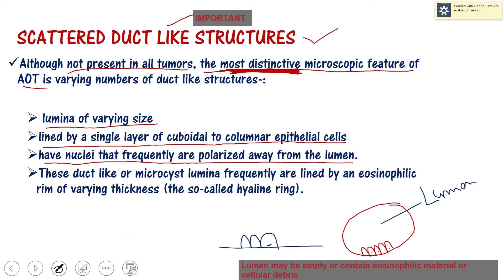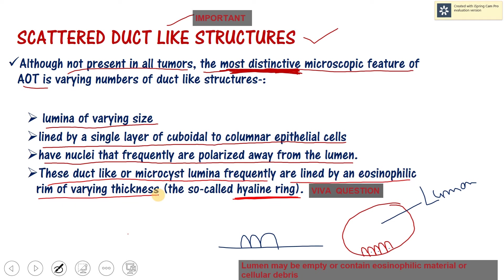One more important thing to remember is the hyaline ring. These duct-like or micro-cyst lumina are lined by an eosinophilic rim of varying thickness, which is called the hyaline ring. This is extremely important for examinations — the duct-like structure is lined by this eosinophilic ring called the hyaline ring.